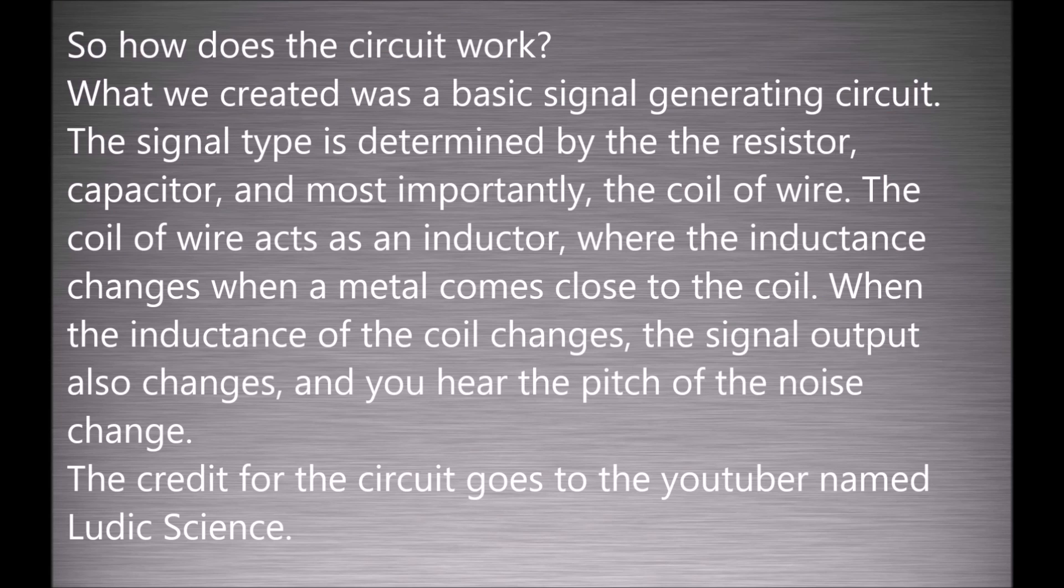So how does the circuit work? What we created was a basic signal generating circuit. The signal type is determined by the resistor, capacitor, and most importantly, the coil of wire. The coil of wire acts as an inductor where the inductance changes when a metal comes close to the coil. When the inductance of the coil changes, the signal output also changes and you hear the pitch of the noise change. The credit for the circuit goes to the youtuber named Ludic Science.